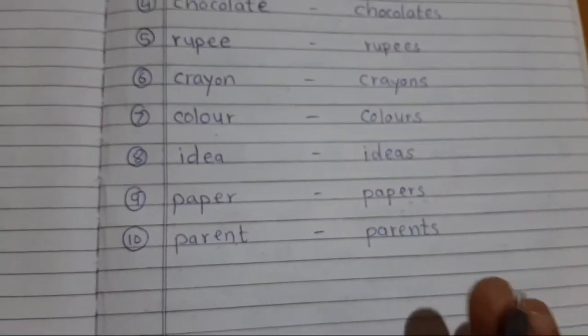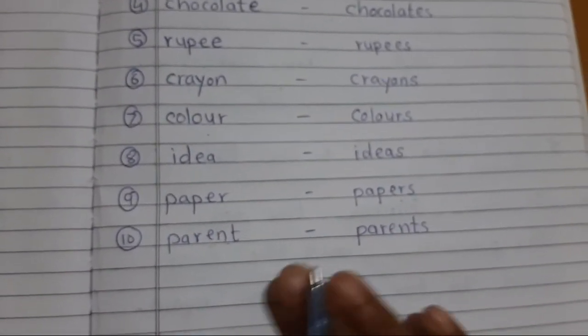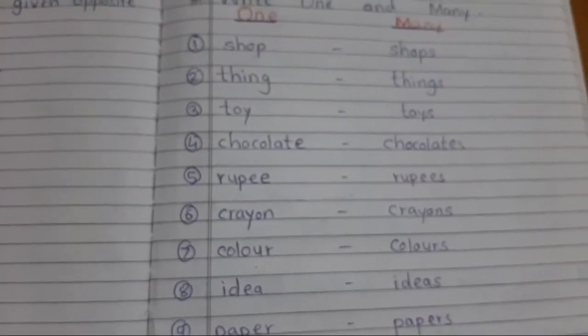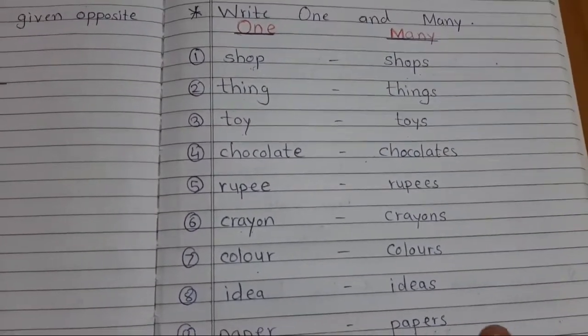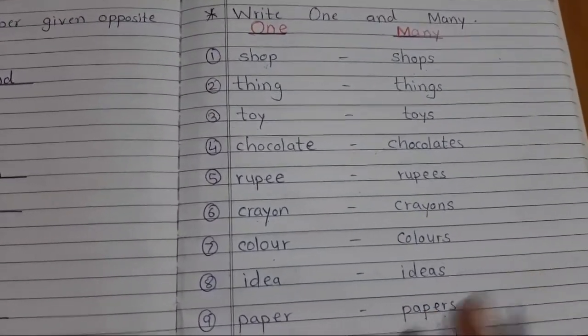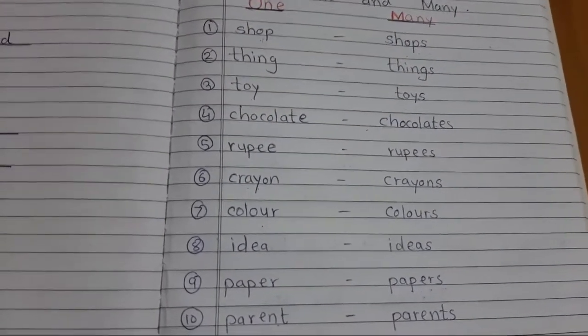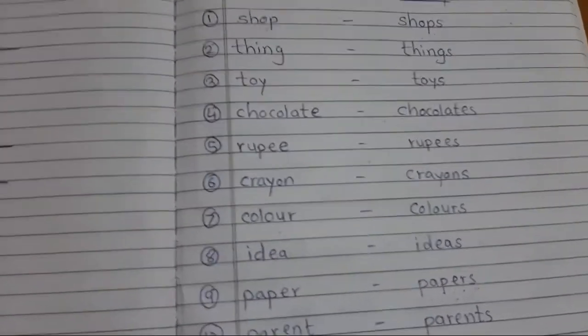Understand? So students, write down opposite words and one or many words in your notebook with a good handwriting and revise them. Don't just write, you should revise them. You have to revise them nicely.